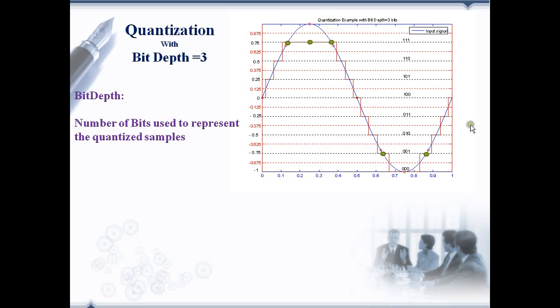A 3-bit quantizer and the corresponding binary codes are shown here. We have taken the same samples that we used in the 2-bit quantization example. In fact, these samples are taken from the 1 Hz sine wave with a sampling frequency of 8 Hz. The quantized values for these 8 samples are also shown.